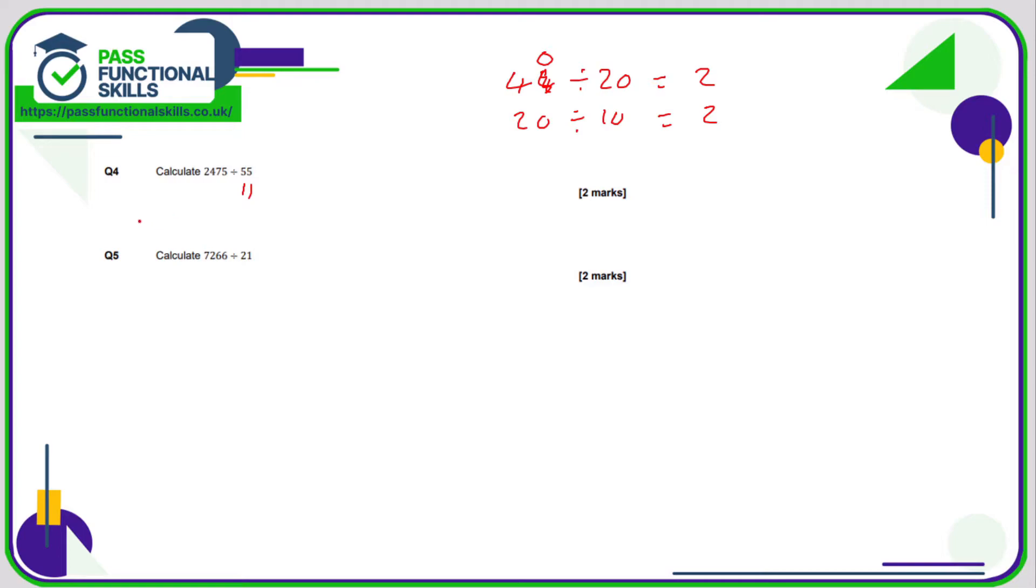55 divided by five, that's nice and easy. That's 11. How many fives go into 2475? Two divided by five is zero, carry the two. 47 divided by five is nine. 25 divided by five is five.